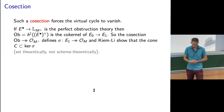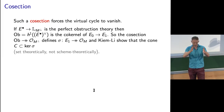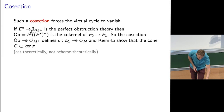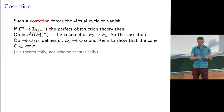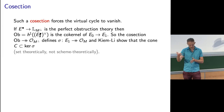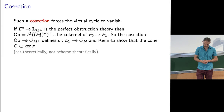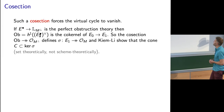If you have a perfect obstruction theory, in the fantasy situation this would be the dual of the obstruction theory. The virtual tangent bundle would be the tangent bundle of the ambient space mapping to the vector bundle cutting out the moduli space. The co-kernel of that map is what's called the obstruction space.